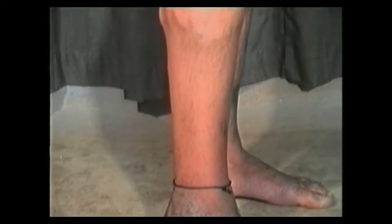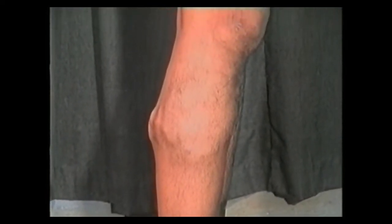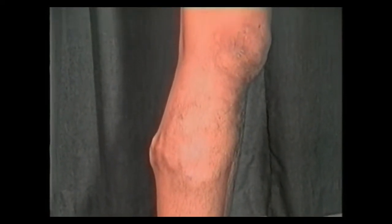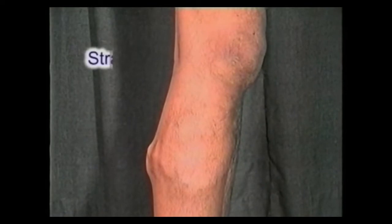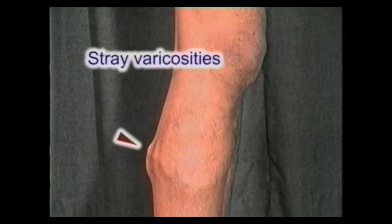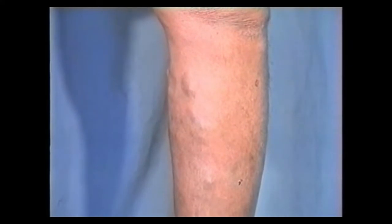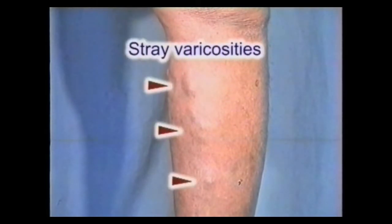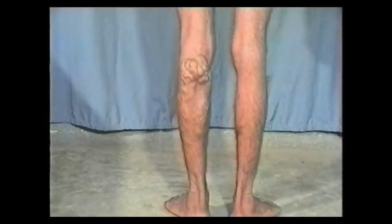The short saphenous varicosities run over the posterior aspect of the calf to converge and end at the center of the popliteal fossa. Some varicosities may not conform to these anatomical pathways and are termed stray varicosities. Inspect the long saphenous system, the short saphenous system and their relation to the present varicosity. For this, you must examine the leg from all sides, front and back.